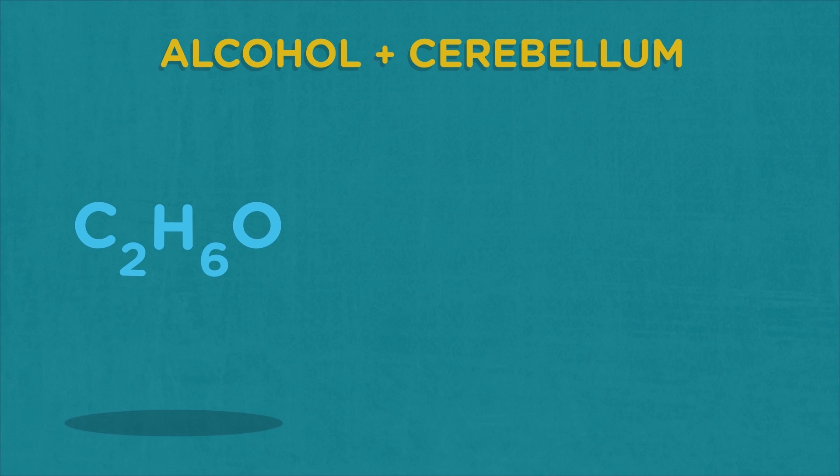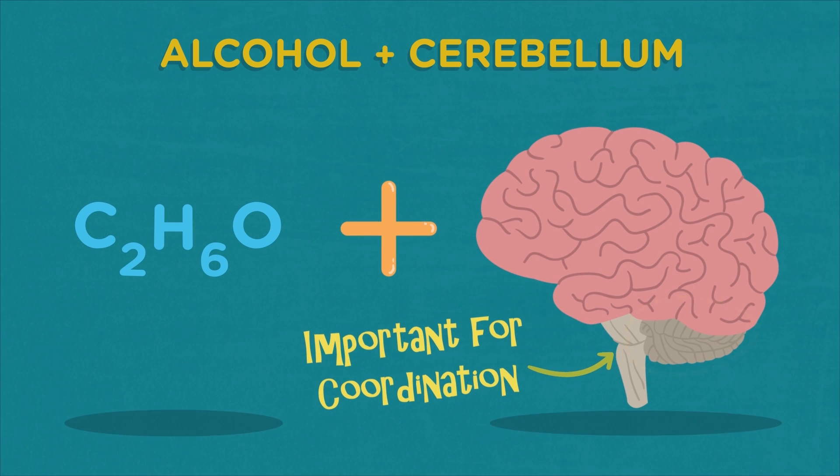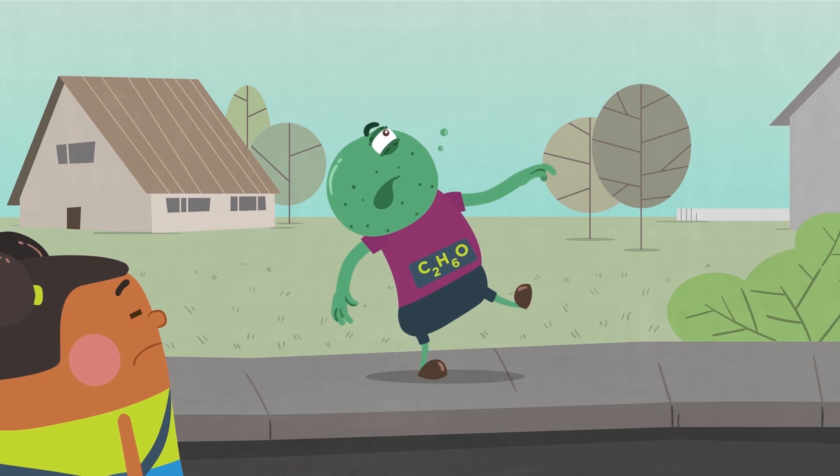For example, if too much alcohol hits your cerebellum, which is important for coordination, you might lose your balance and fall.